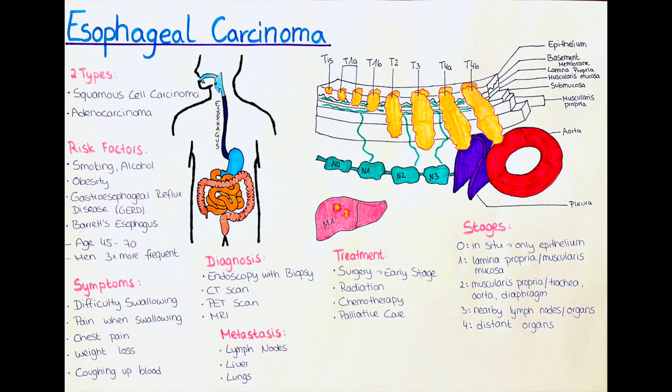Squamous cell carcinoma typically develops in the upper and middle part of the esophagus and is often associated with heavy alcohol consumption and tobacco use. It begins in the thin, flat cells that make up the inner lining of the esophagus. The cancer cells can grow and spread to nearby lymph nodes and other organs if not treated promptly.